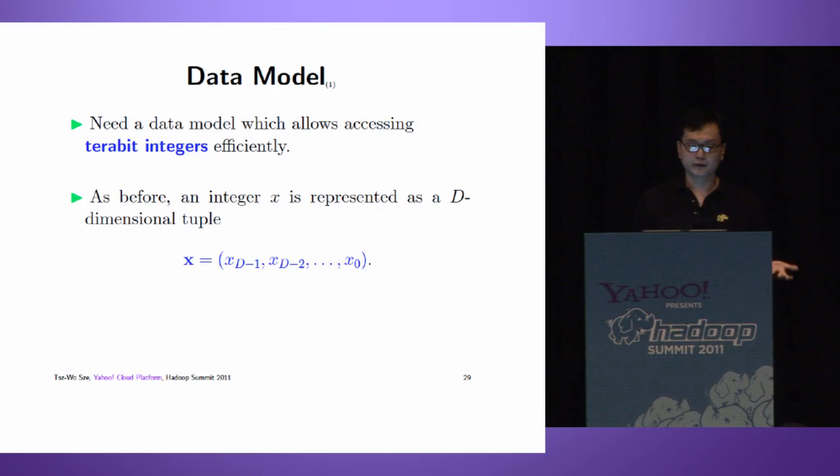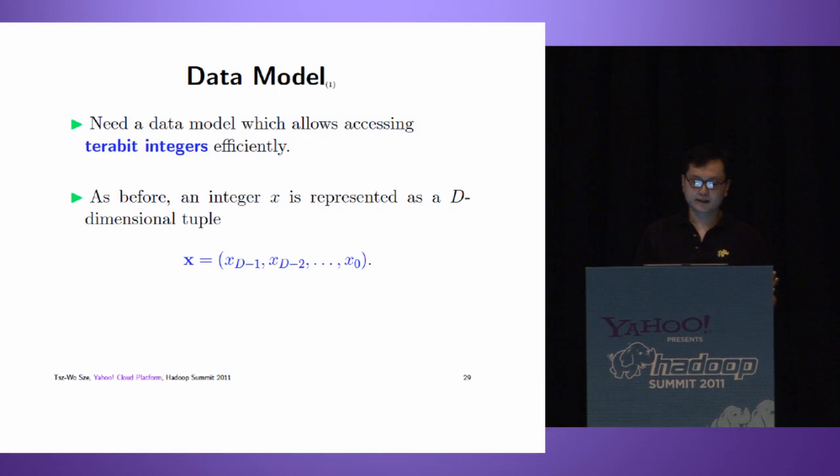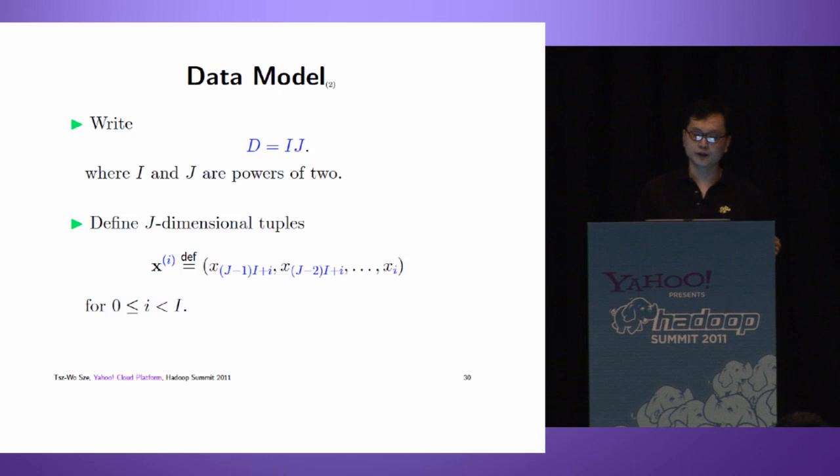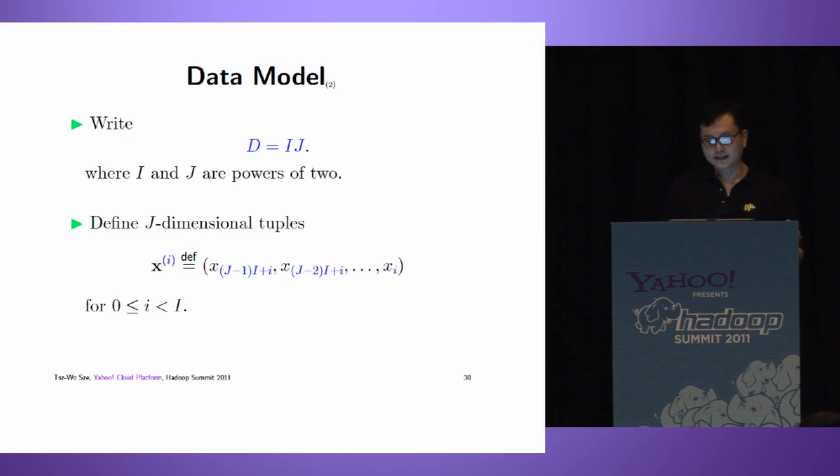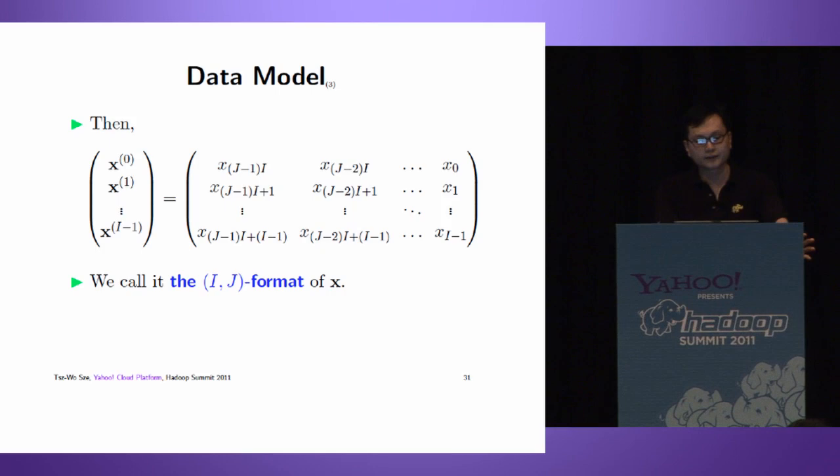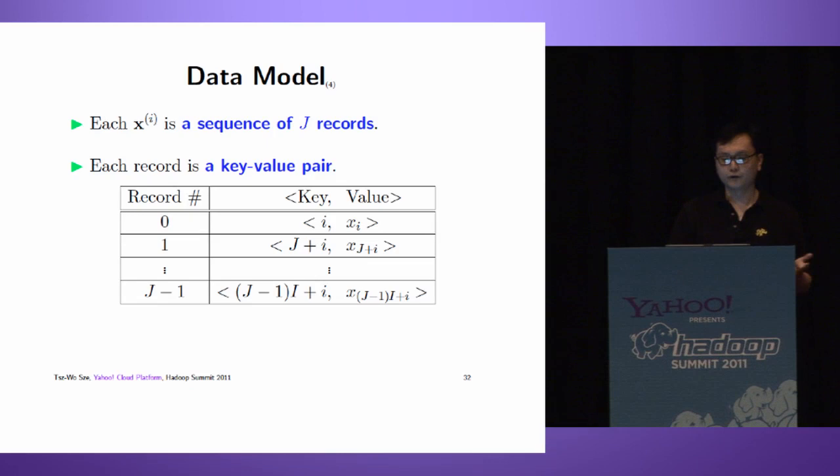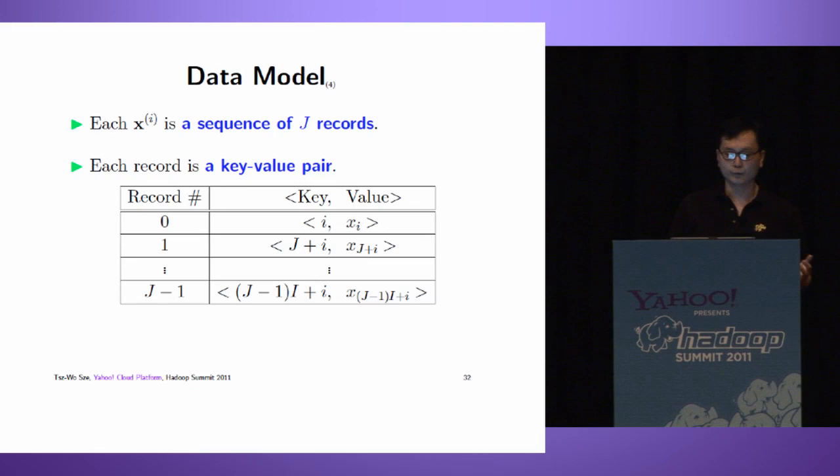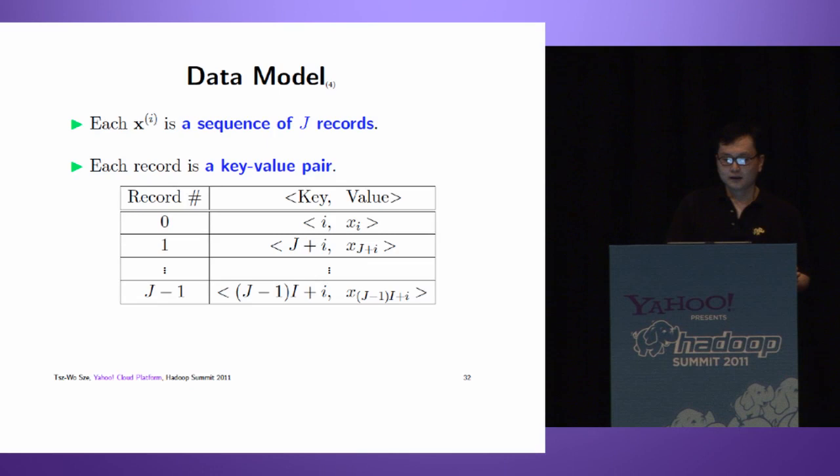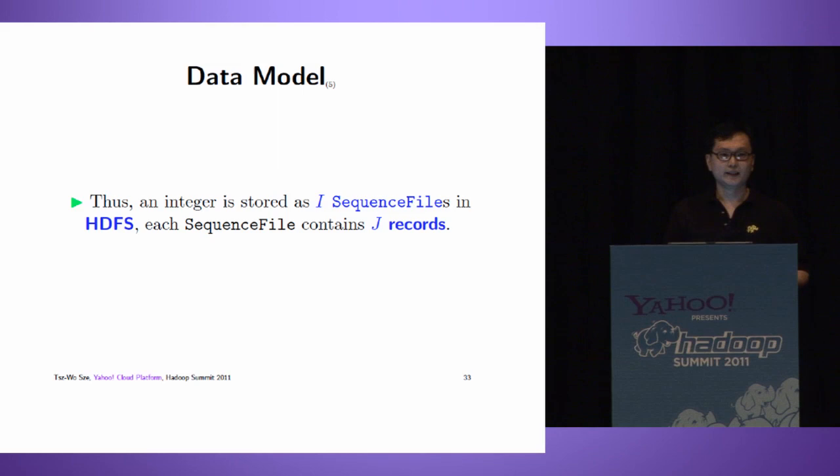Before discussing the algorithm, we need a data model to store the integer. We have a terabyte integer. We represent an integer as a D-dimensional tuple. We write D = I × J. We define XI as a J-dimensional tuple, and we have I such tuples. When we put them together, we form a matrix called the IJ format of X. Each XI is a sequence of J records, each record a key-value pair. We store an integer as I sequence files in HDFS, each sequence file contains J records.